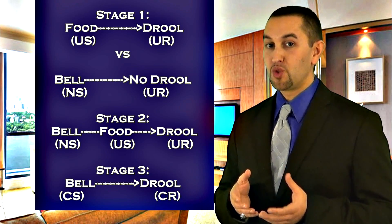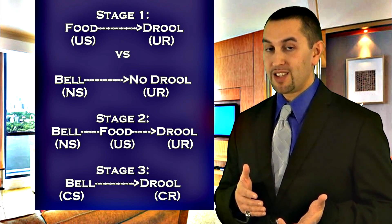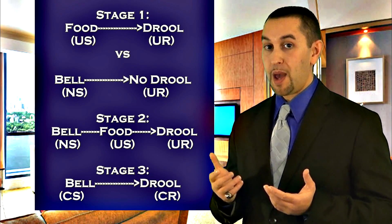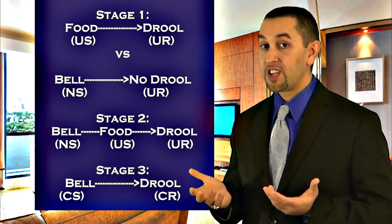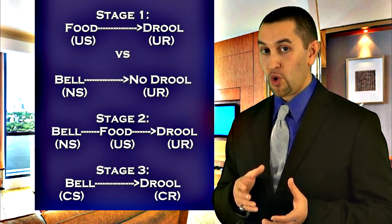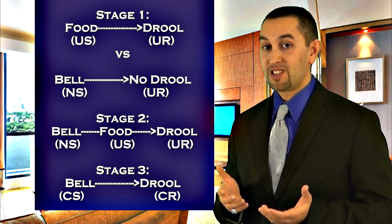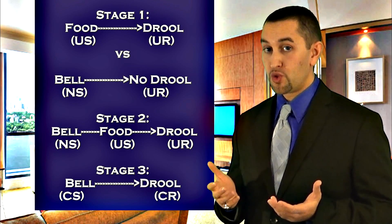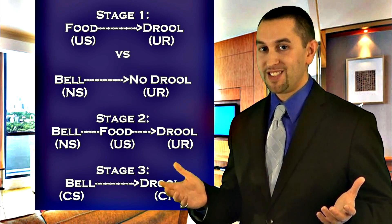When the dogs drool in response to food, that's called an unconditioned response. Things that happen naturally are considered unconditioned, while learned connections are called conditioned. Lastly, the bell is called a neutral stimulus, because it produces no reaction.